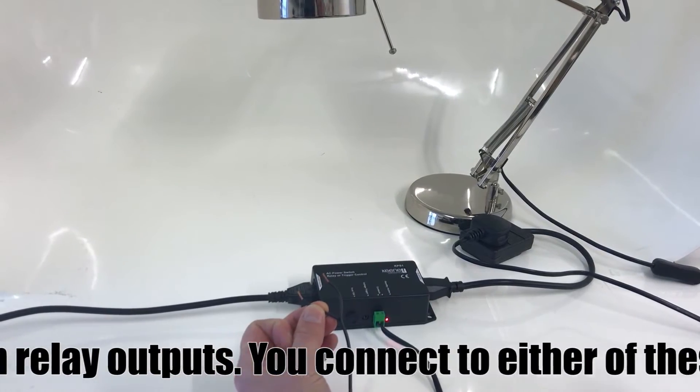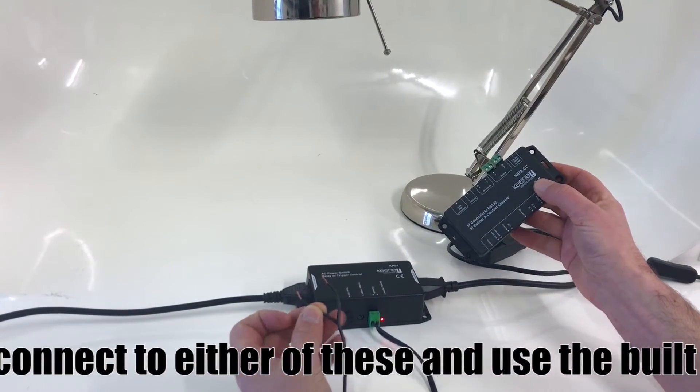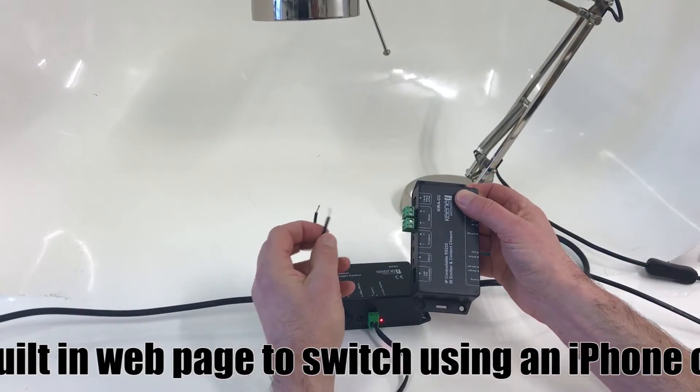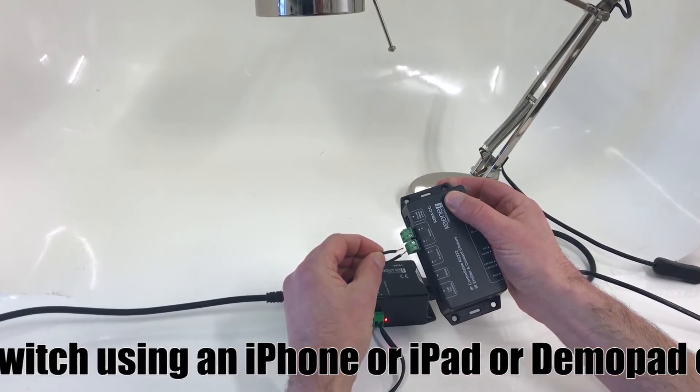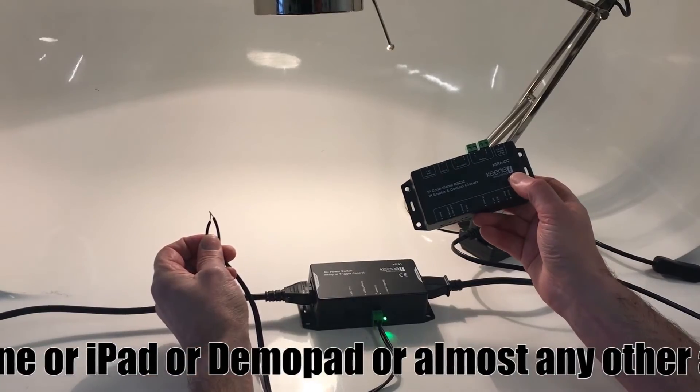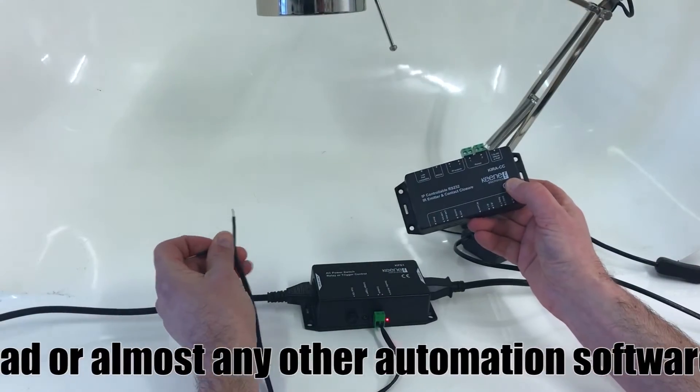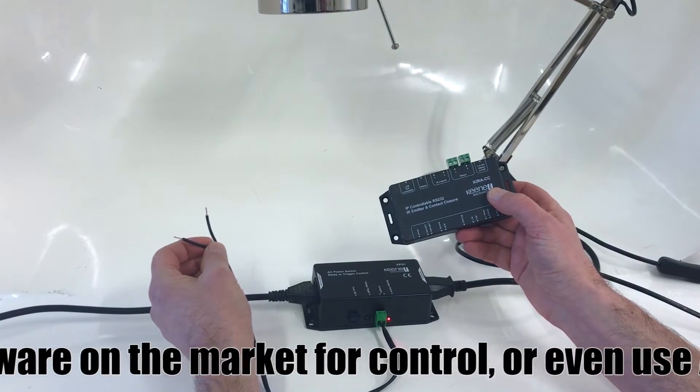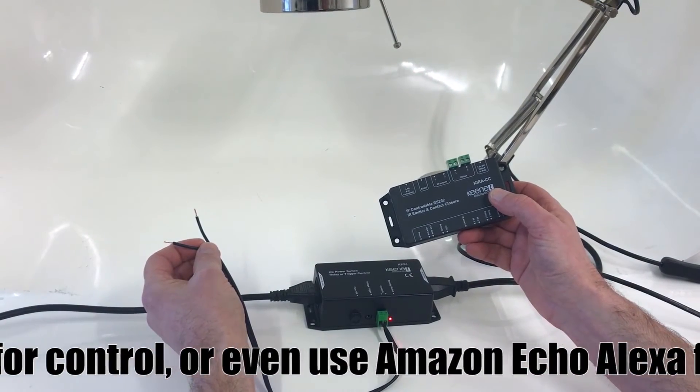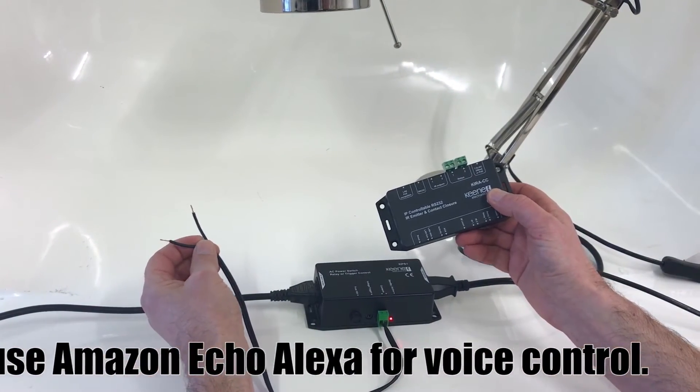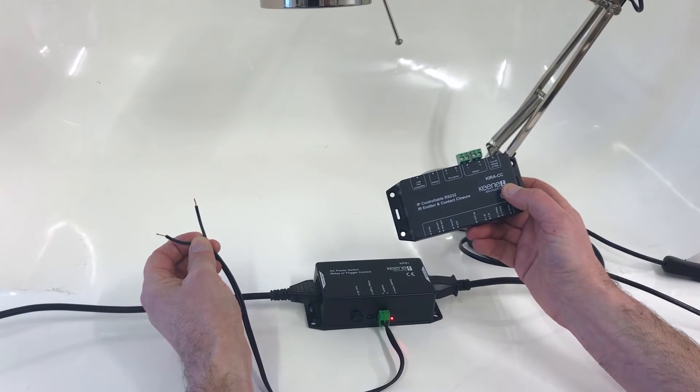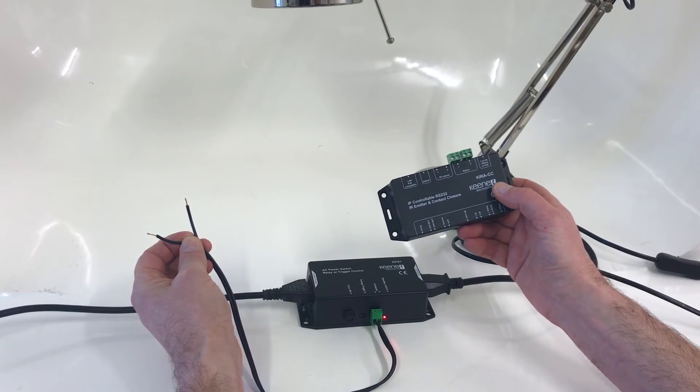You can also use the Kira CC, another Keen product, and that's got twin relay outputs on it. So you just literally connect those to those. You can then use the inbuilt web page to switch the closure using an iPhone or an iPad or Demopad or any other automation software that's on the market for control. You can also use Amazon Alexa for voice control.